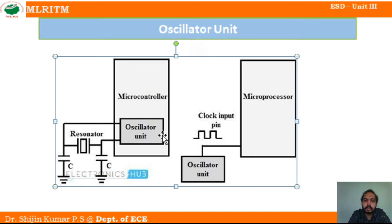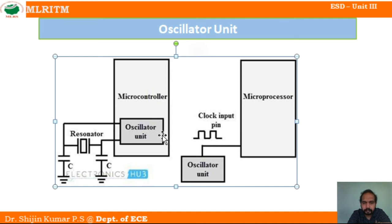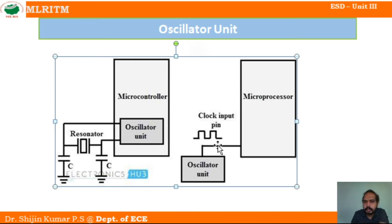Looking at the circuit, in a microcontroller we have a built-in oscillator unit, whereas in a microprocessor the oscillator unit is connected externally. The clock is given to the microprocessor through an external pin.